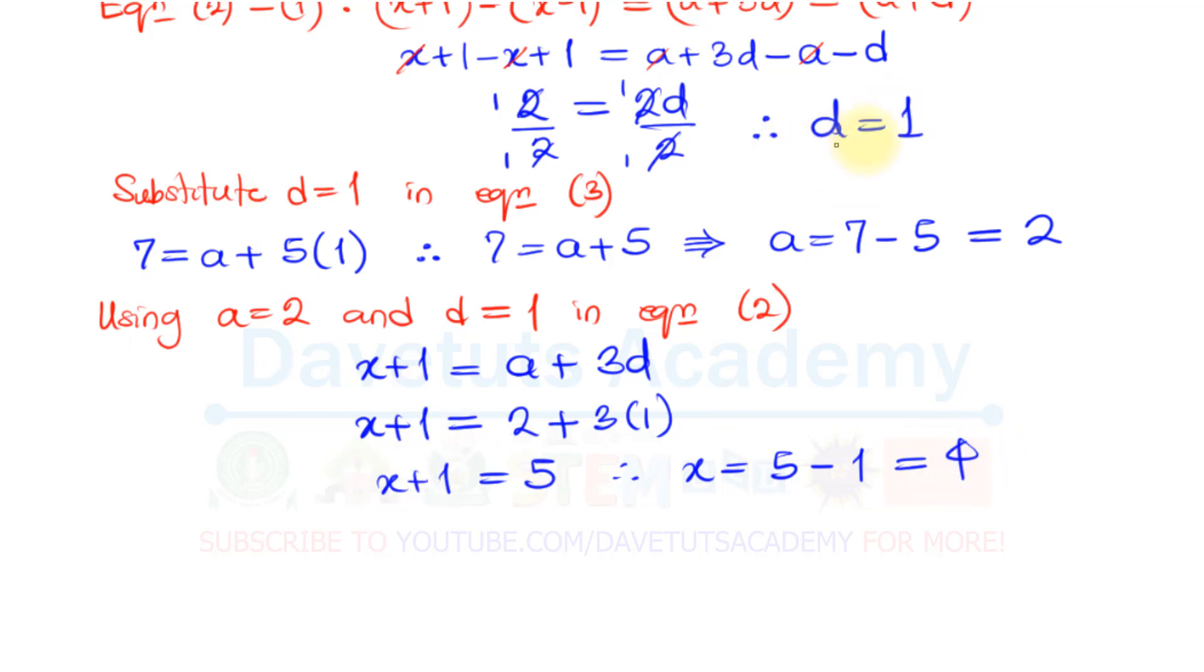If you look critically, we've been able to answer the questions that were asked, the common difference, the first term, and the value of x. So we can just effectively write out your answers and say, the common difference d = 1, the first term a = 2, and the value of x = 4.